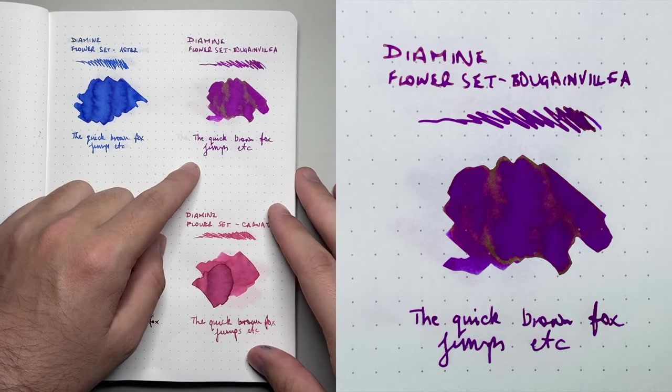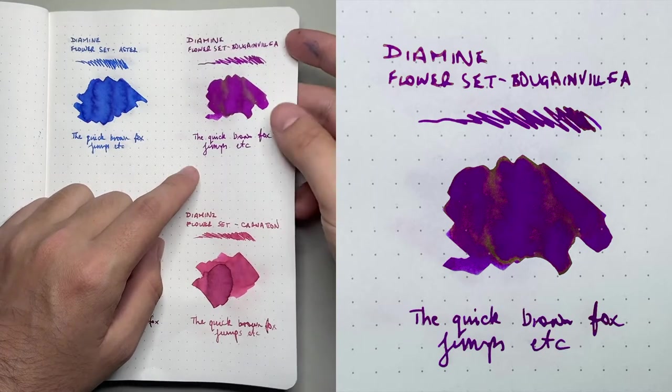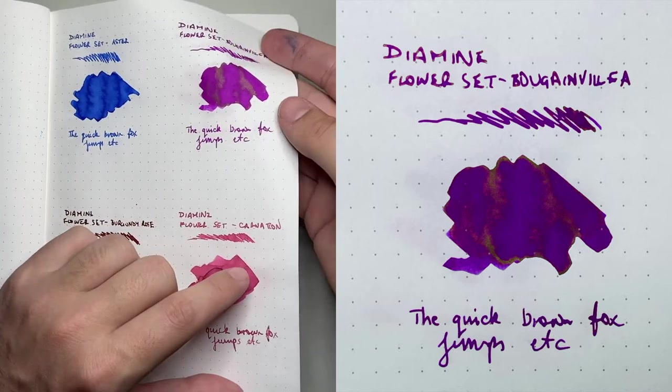Then Bougainvillea, which is a very nice pink magenta color and once again some nice sort of gold sheen coming up on that.